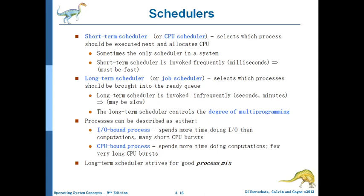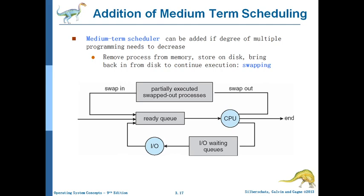For good performance, you should not have all processes that are CPU bound. If all processes are CPU bound, your I/O devices will be almost empty and not utilized. If most processes are I/O bound, then the CPU is frequently switching and may be idle some of the time, reducing performance. For better performance, the long-term scheduler should select a proper mix of CPU bound and I/O bound processes.